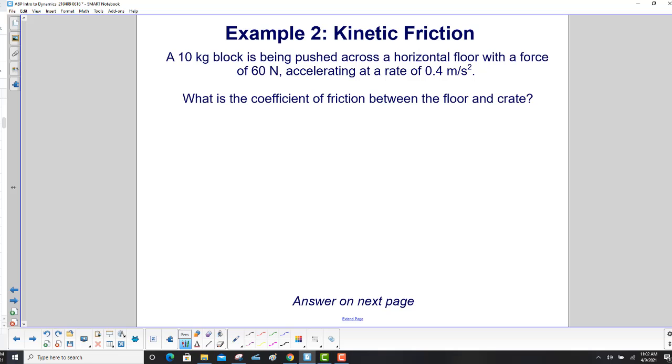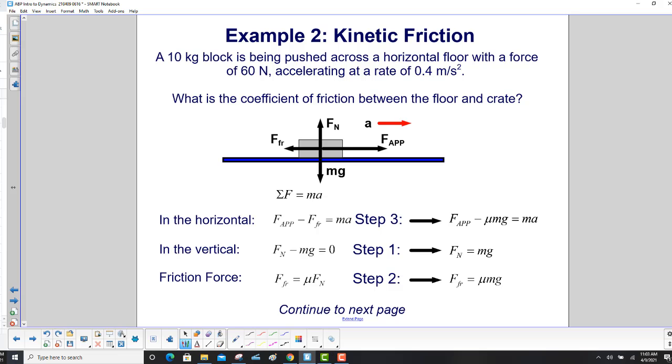A 10 kilogram block is being pushed across a horizontal floor with a force of 60 newtons, accelerating at a rate of 0.4 meters per second squared. What is the coefficient of friction between the floor and the crate? There's a lot going on in this problem. First, we draw all the forces on our block. We've got the normal going up, mg going down. We have an applied force to the right, and a friction force to the left. Note we draw the friction force smaller than the applied force, because we know that the object is accelerating to the right, because that's what we're given. So, the applied force has to be greater than the friction force.